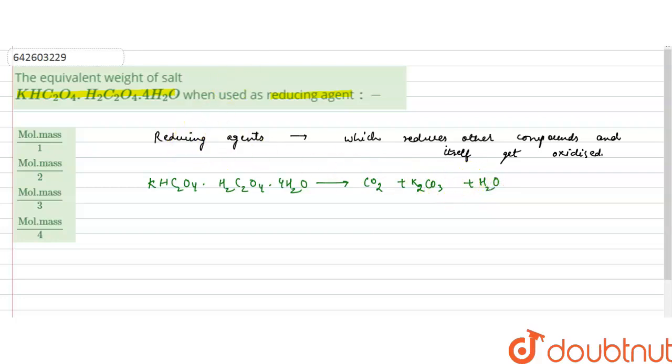Now we will see the oxidation state of carbon in this compound. For potassium it is +1, for hydrogen it is also +1. Let us say for carbon it is x, so for two carbon atoms it is 2x, and for oxygen it is -8. It will be equal to zero, so this gives 2x - 6 = 0, 2x = 6, and x = +3. It means here it is +3.